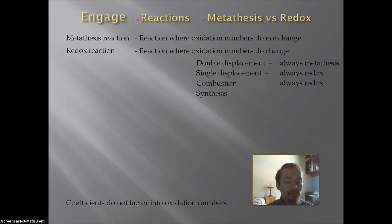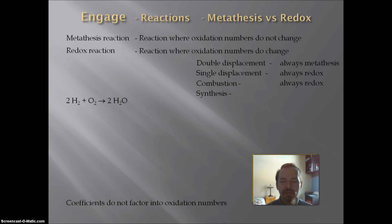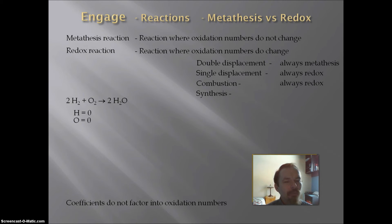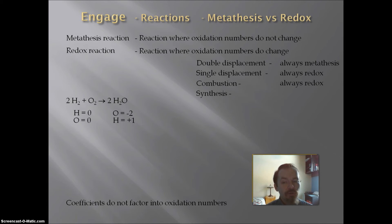Let's look at synthesis reactions. An example is hydrogen and oxygen coming together to make water. Hydrogen is in its elemental form, so its oxidation number is 0. Oxygen is in its elemental form, so its oxidation number is also 0. On the product side in water, oxygen is in a compound so its oxidation number is minus 2, and hydrogen is bonded with a non-metal so its oxidation number is plus 1. Hydrogen goes from 0 to plus 1 and oxygen goes from 0 to minus 2, so this is a redox.